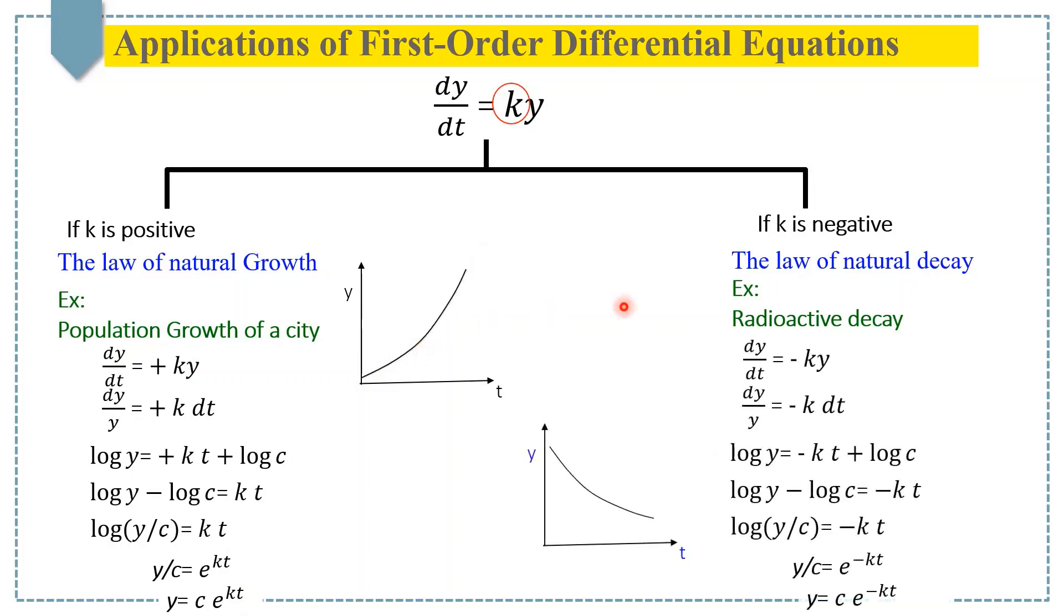Similarly, if we solve this differential equation again, this time we put the minus sign here and keep all the steps the same as we have done before, but just keeping the minus sign with k. Then by solving this differential equation, we get y = c·e^(-kt).